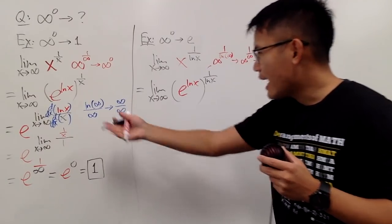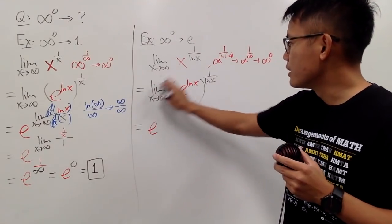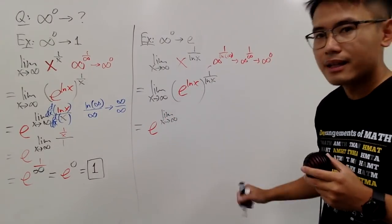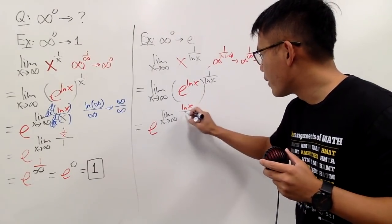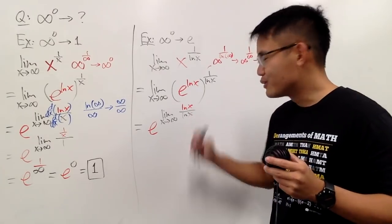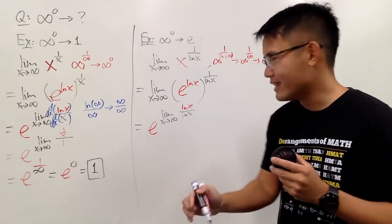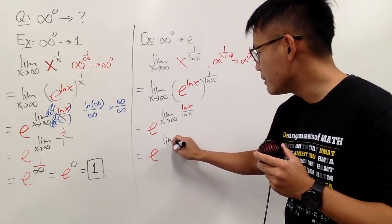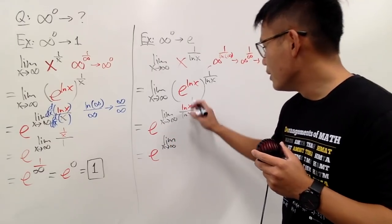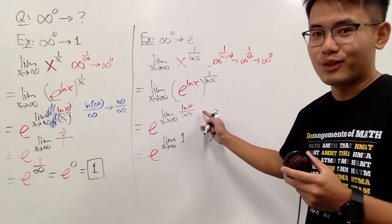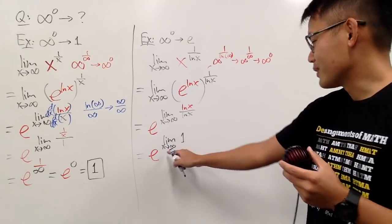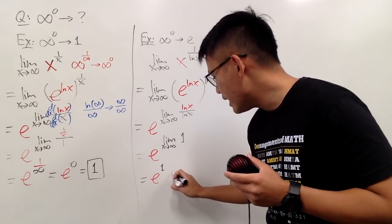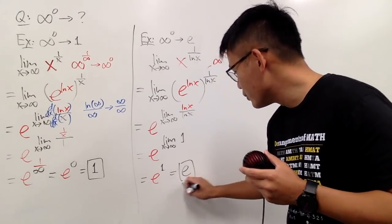Putting e on the outside, we take the limit as x approaches infinity of ln x times 1 over ln x, which is just ln x over ln x. This equals 1, and the limit of 1 doesn't depend on what x is approaching — it's just 1. So in the end we have e to the first power, which is nicely equal to e.